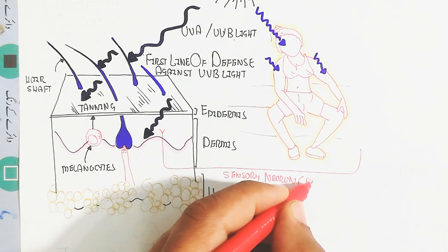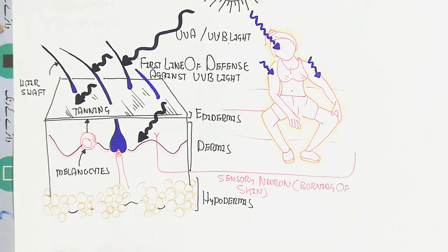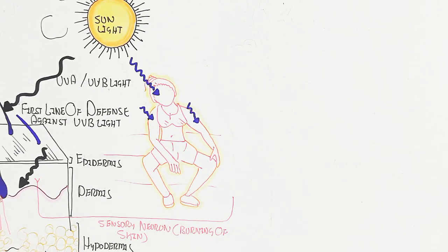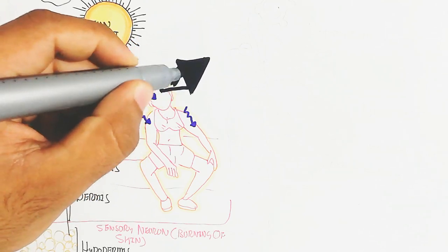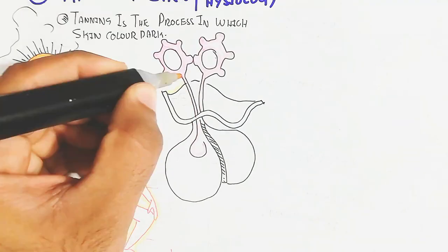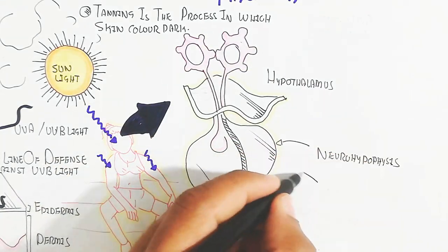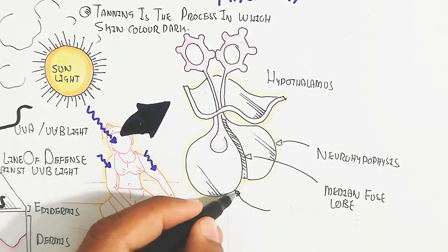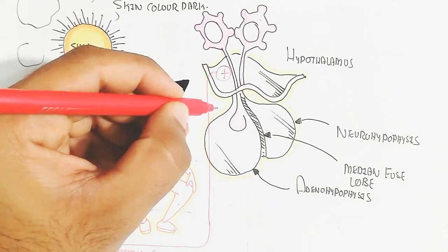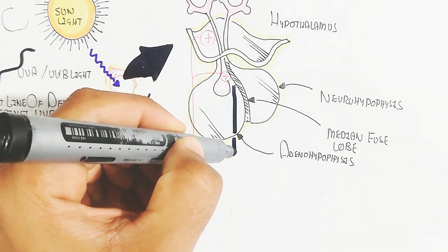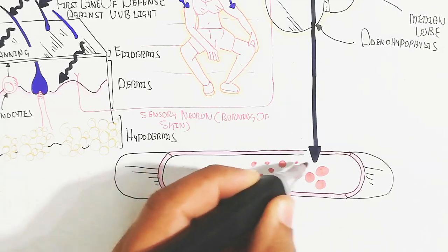This burning sensation signal travels to the hypothalamus and the median lobe of the pituitary gland to change the physiology. The pituitary gland has three lobes: the neurohypophysis (posterior pituitary), the median lobe, and the adenohypophysis (anterior pituitary). The median lobe is responsible for melanin-related hormone production. The hypothalamus stimulates the median lobe to release melanophore stimulating hormone (MSH).